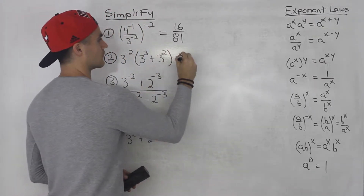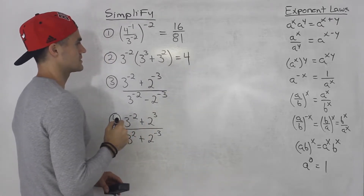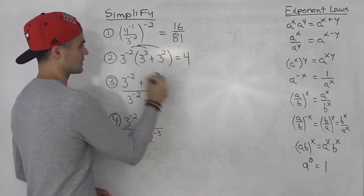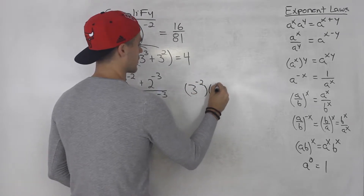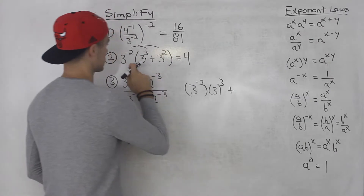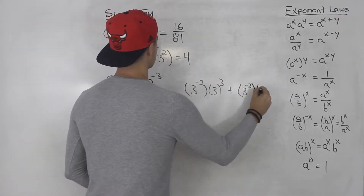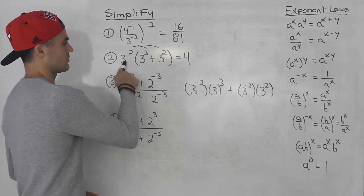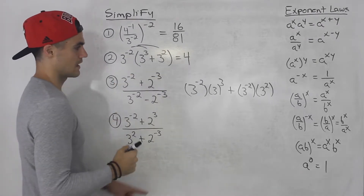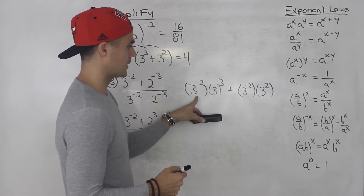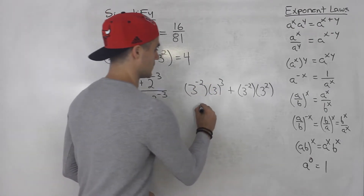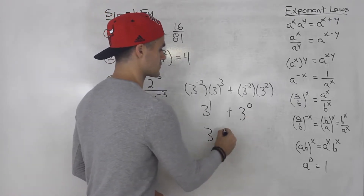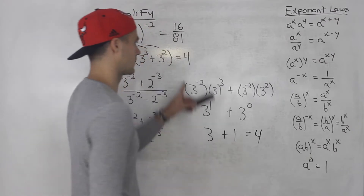You have to deal with the bracket first. Another thing you could actually do — you'll get the same answer — is you could distribute this expression into the bracket. So you can have three to the power of negative two times three to the power of three, plus three to the power of negative two times three to the power of positive two. Here we're multiplying exponents with the same base, so we add them: negative two plus three is one, so this is three to the power of one. Then negative two plus two is zero, so this is three to the power of zero. Three to the power of one is three, three to the power of zero is one, so this ends up being four — same answer.